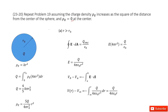First, let's write down what is given. The charge density increases as the square of the distance, so we write the function with r-squared. You can see the r-squared term. K is a constant.